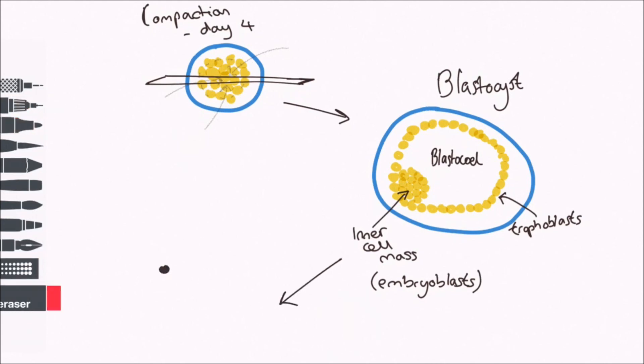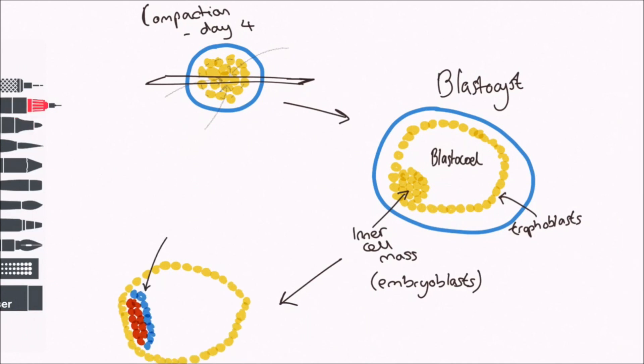On day five, the inner cell mass forms two layers, the epiblast and the hypoblast.